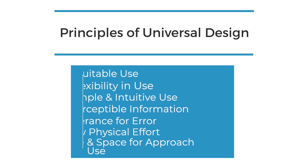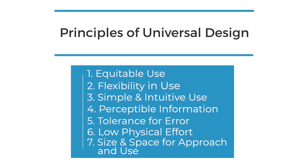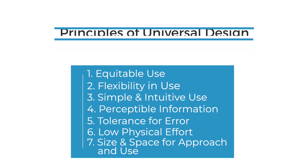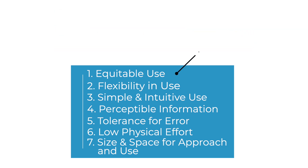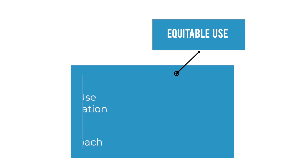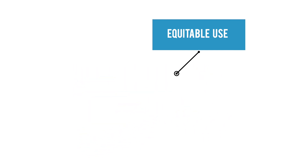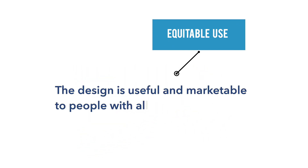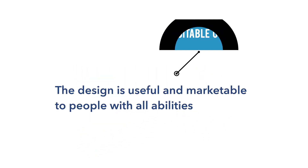But what do all of these principles mean? Let's start by defining each of the principles individually and how they relate to design. The first principle of universal design is equitable use, meaning the design is useful and marketable to people of all abilities.